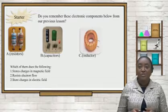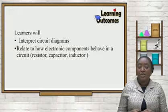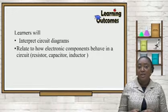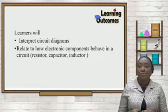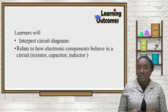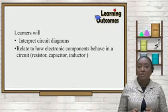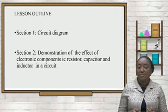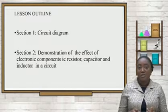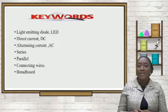In our lesson today, we would learn to interpret circuit diagrams. Then we'll go on to relate how circuit components behave in an electronic circuit, namely our resistors, capacitors, and inductors. So to start us off, we would interpret circuit diagrams and demonstrate the effects of the electronic components as the lesson progresses.